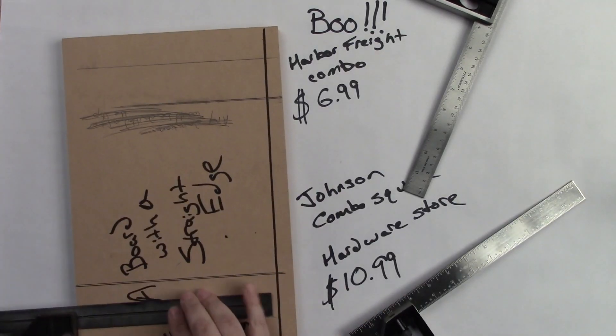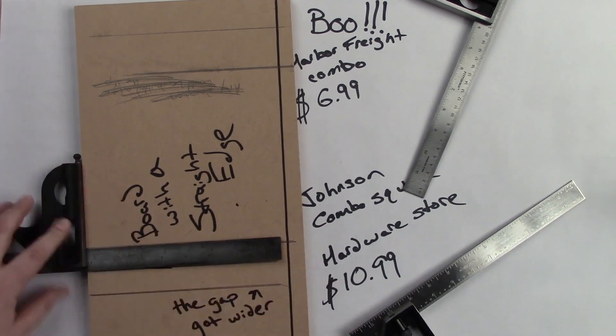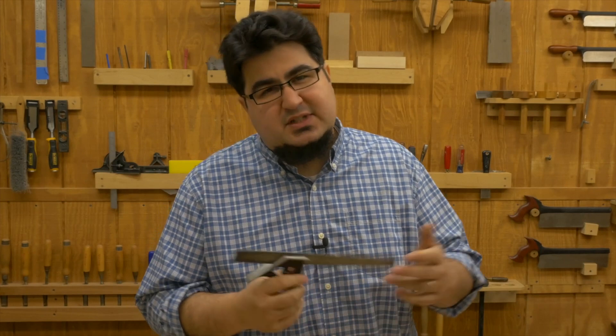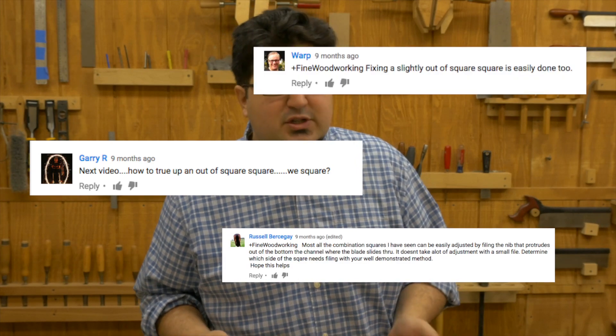A while ago, I made a video showing you how to check and see if a square is truly square or not. And while I was making that video, my beloved Starrett wasn't quite as square as I thought it was. Thankfully, it just turned out to be a little bit of corrosion inside the body and it was easy to clean up. But it left a lot of people wondering, what do you do if your square isn't truly square?